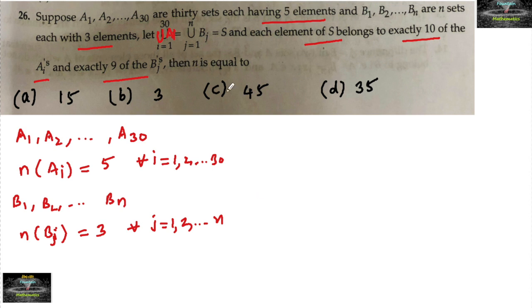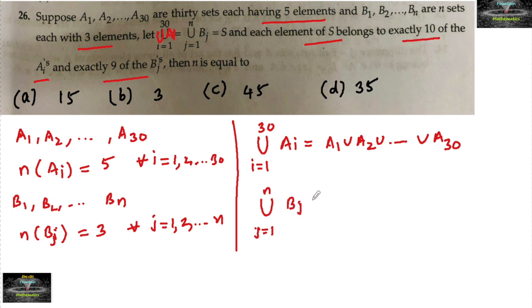And also there is a condition given: let union over i equals 1 to 30 of ai, that is a1 union a2 union a3 and so on union a30, is the same as union over j equals 1 to n of bj, that is b1 union b2 union and so on union bn. Both are equal to S, meaning S is a set containing the union over all these sets.